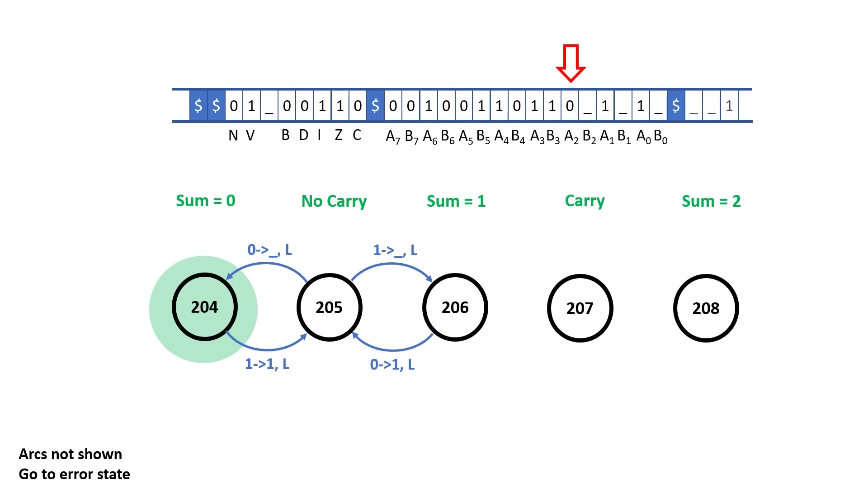But this time in rule 204 I see a zero. Now I could draw another arc out of rule 204, but I want to go to rule 205. So instead of adding a new arc from rule 204 to 205, I'm just going to add another label to the existing arc. If I see a zero, I use the upper label. And if I see a one, I use the lower label. So on this occasion, I'm going to replace the zero with a zero, move left and go to rule 205.